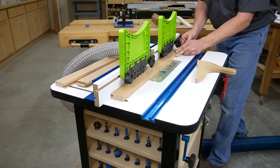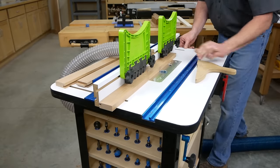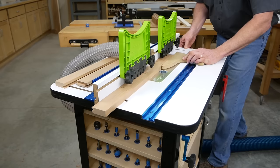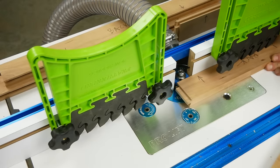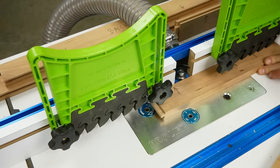If everything looks good, go ahead and run your actual rails and stiles through the sticking cutter. Make sure the edges you want on the inside of the door frame are the ones you present to the router bit. Be careful not to get them turned around. Marking the parts with arrows can help.